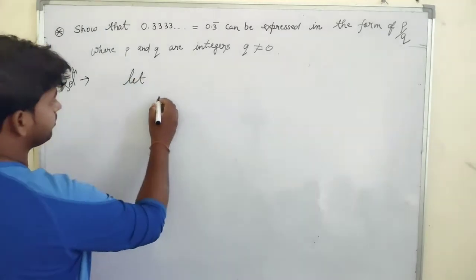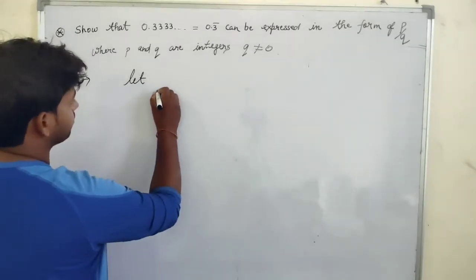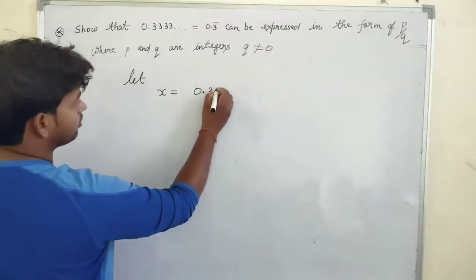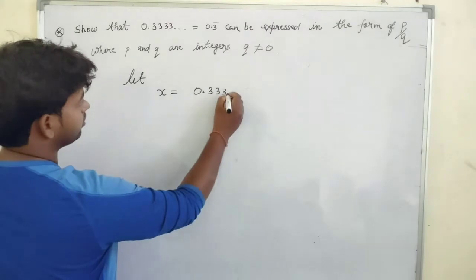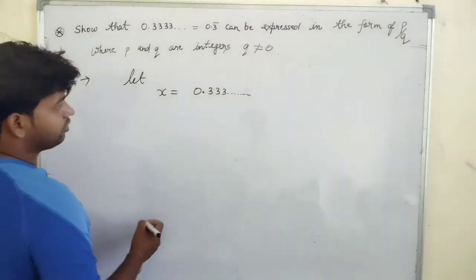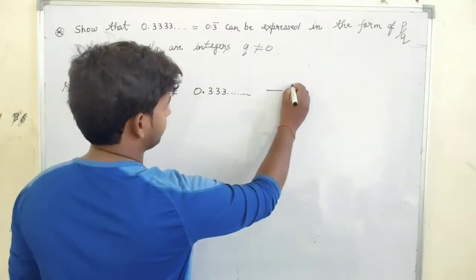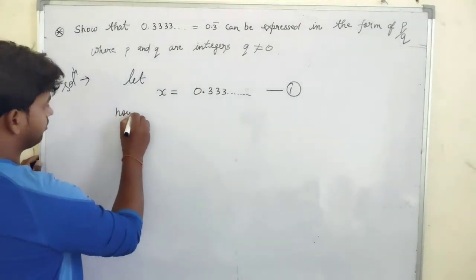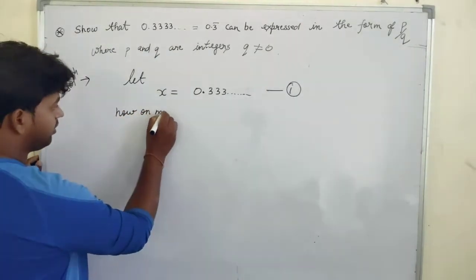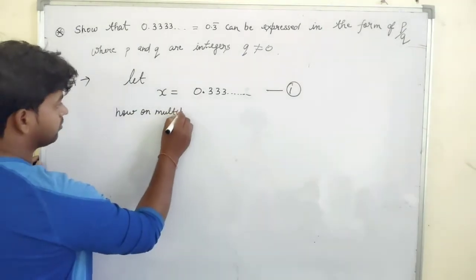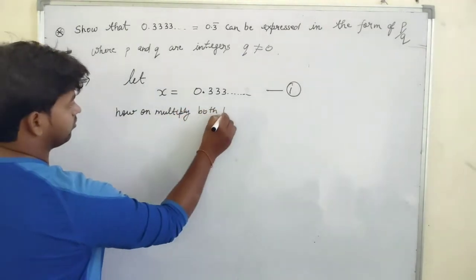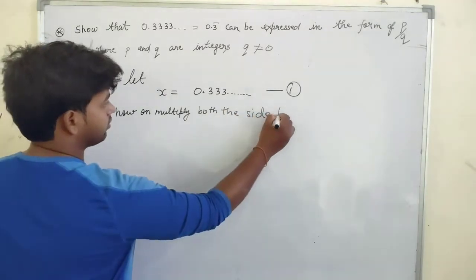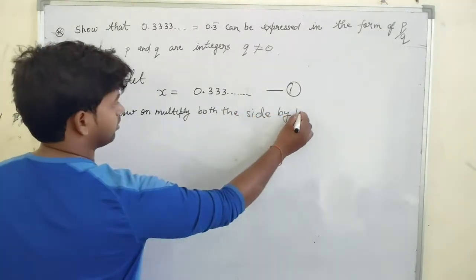Suppose we can write x equal to 0.333 dot dot dot. This will be our first equation. Now multiply both the sides by 10.